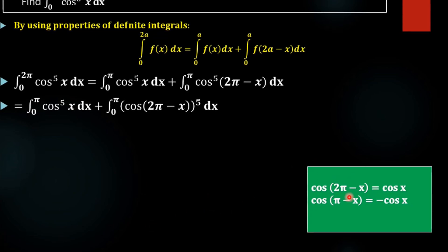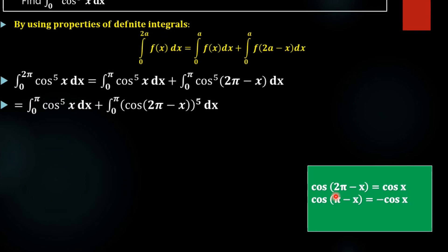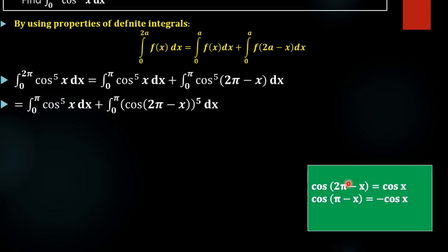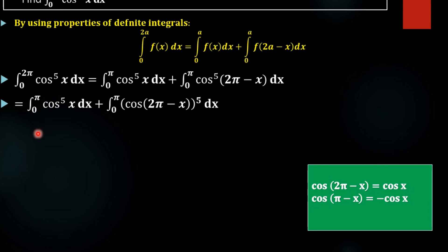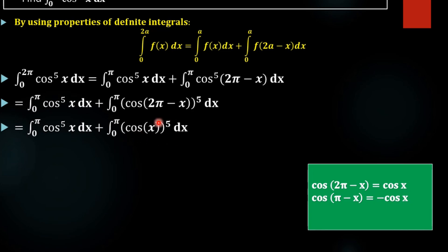It is an even multiple of π/2 — that is, π/2 times 4 equals 2π — so we don't have to change our function. If we had an odd multiple of π/2, such as 3π/2 or 5π/2, we would have to change the function in terms of sine. So the integral becomes: integral 0 to π of cos⁵(x) dx plus integral 0 to π of cos⁵(x) dx, since cos(2π − x) is equivalent to cos x.